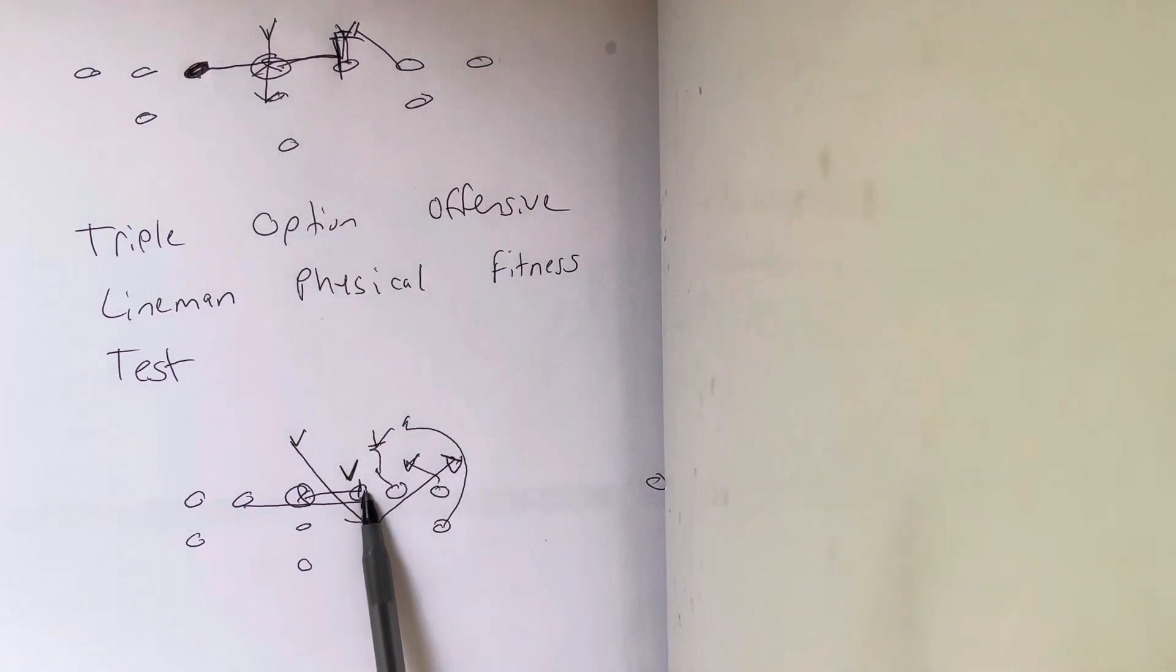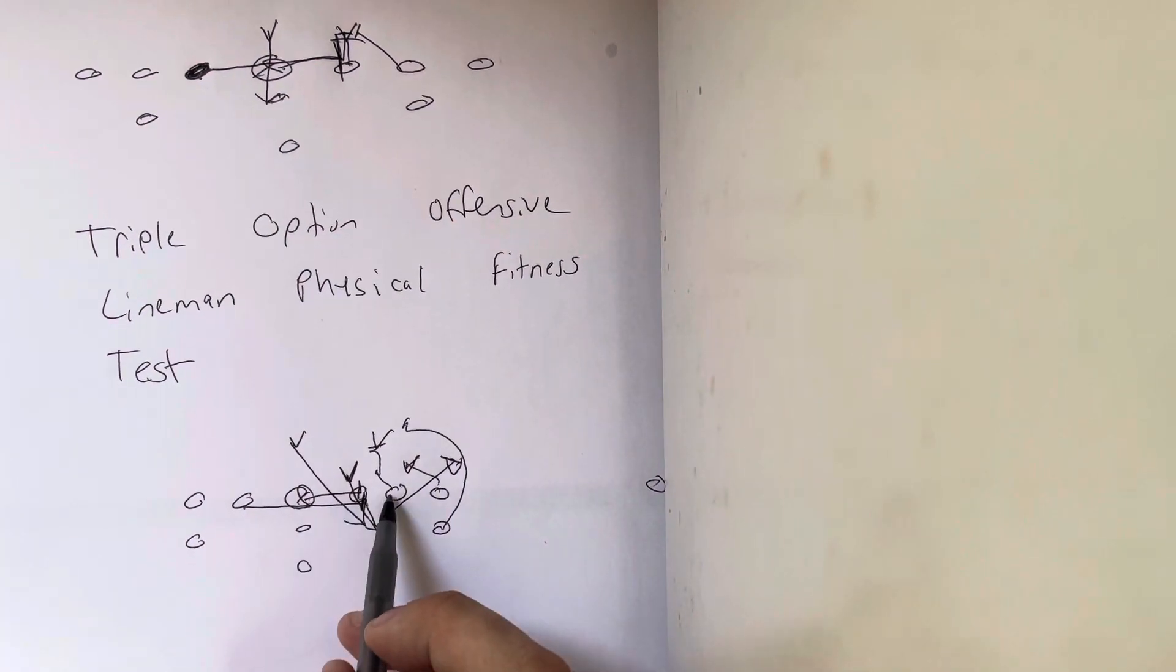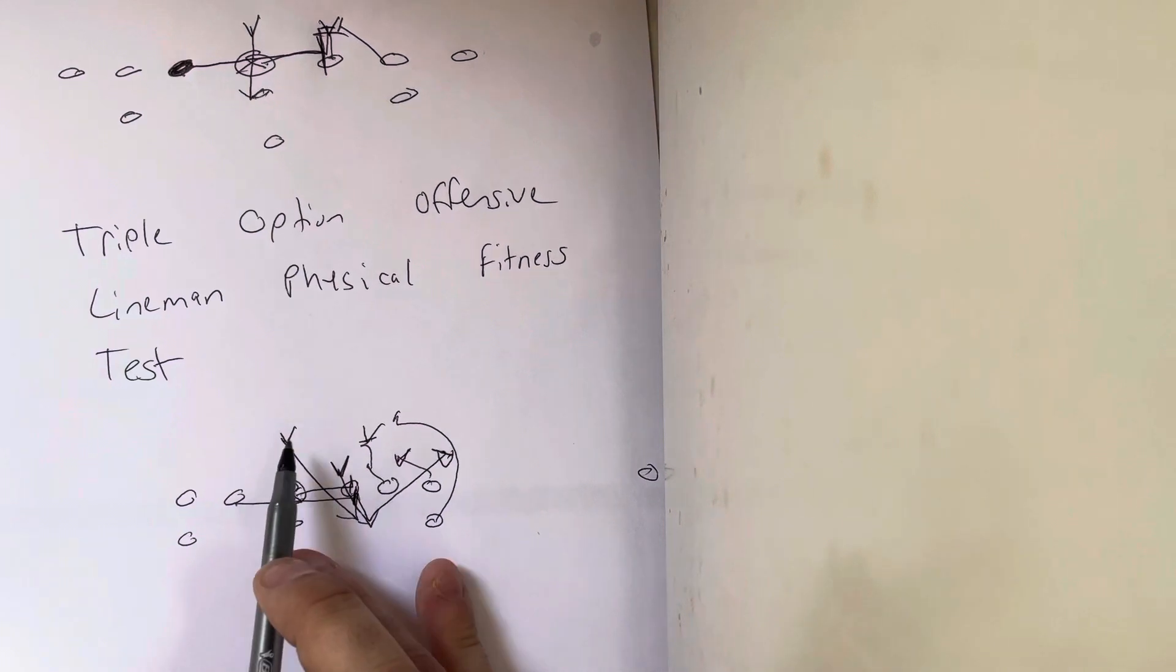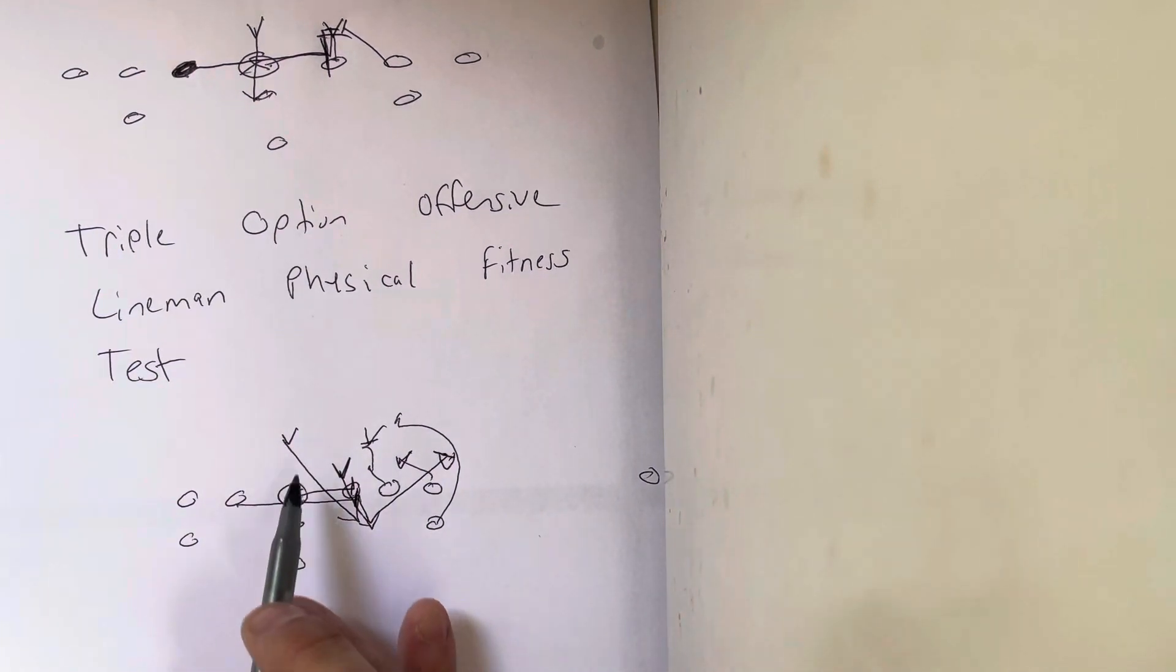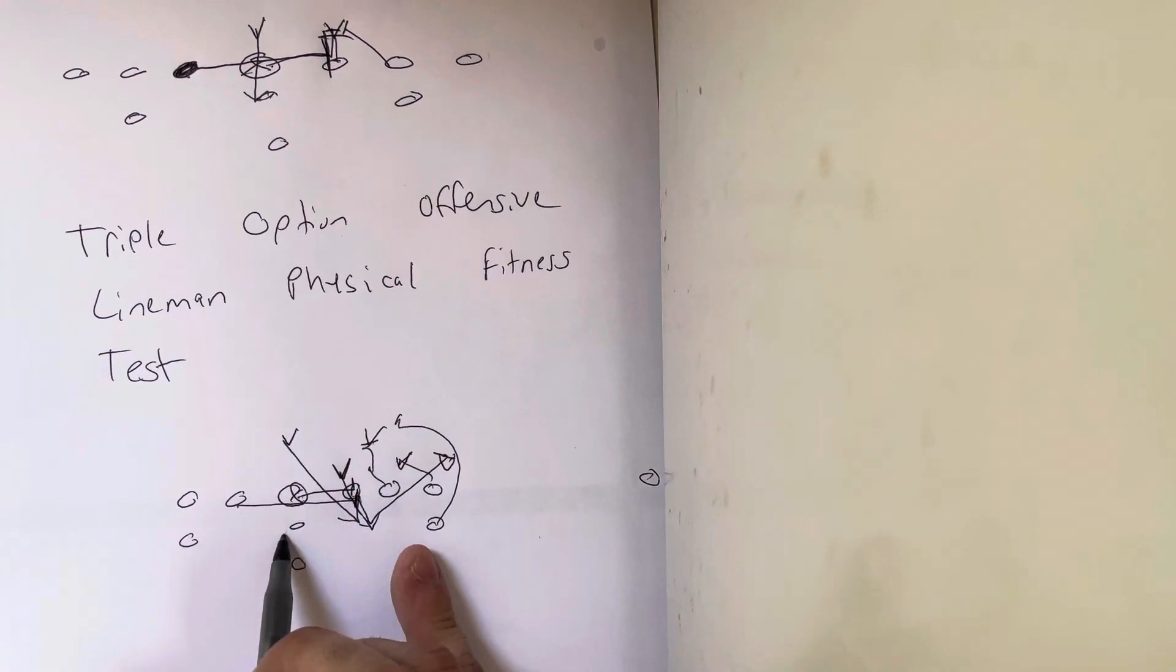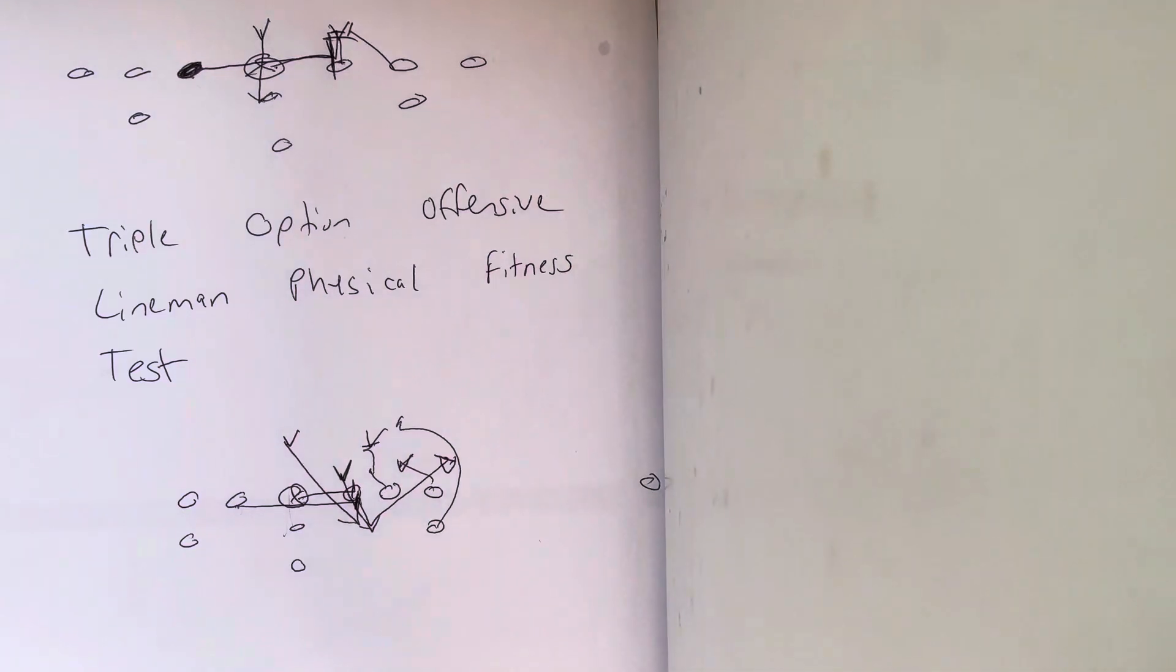So, if you had a 2i and he's going to kick him and this guy goes up the field, the center's got to scoop him. And the guard, let's say they blitzed right here and he's trying to go and backdoor this,